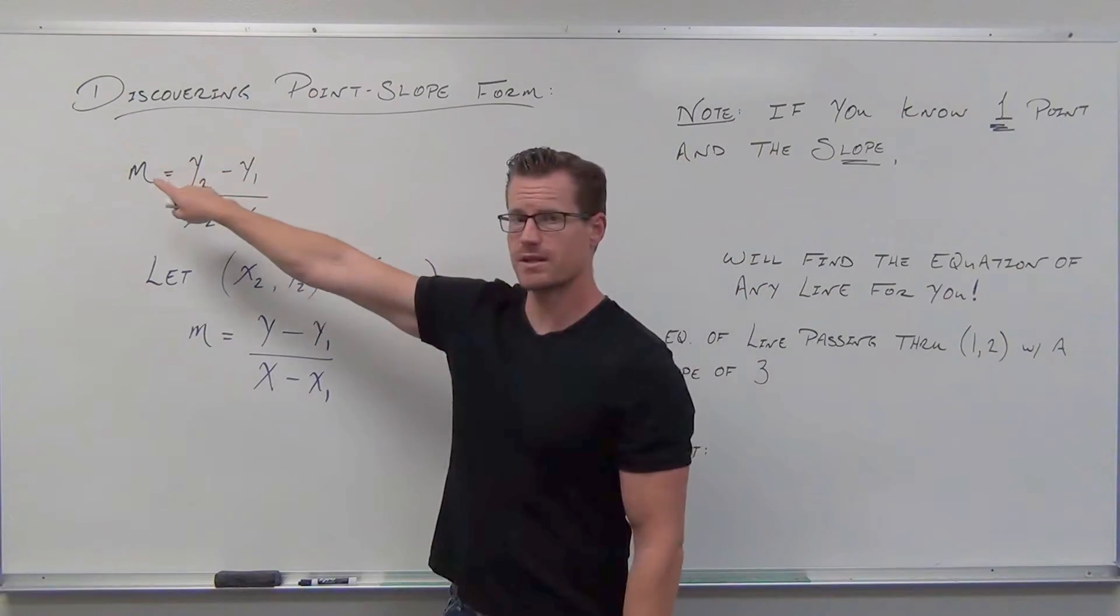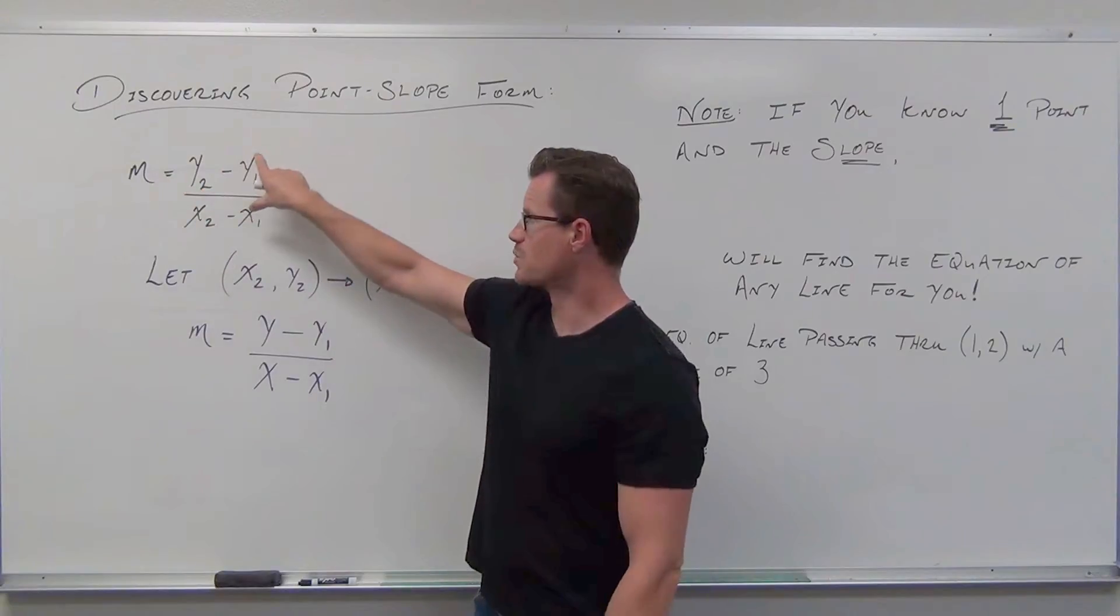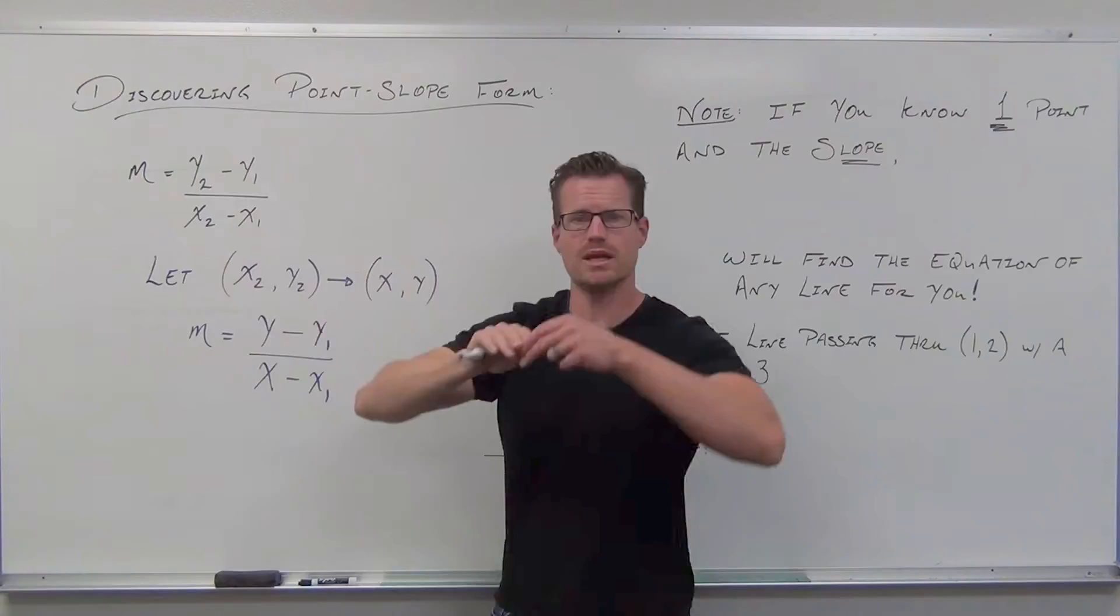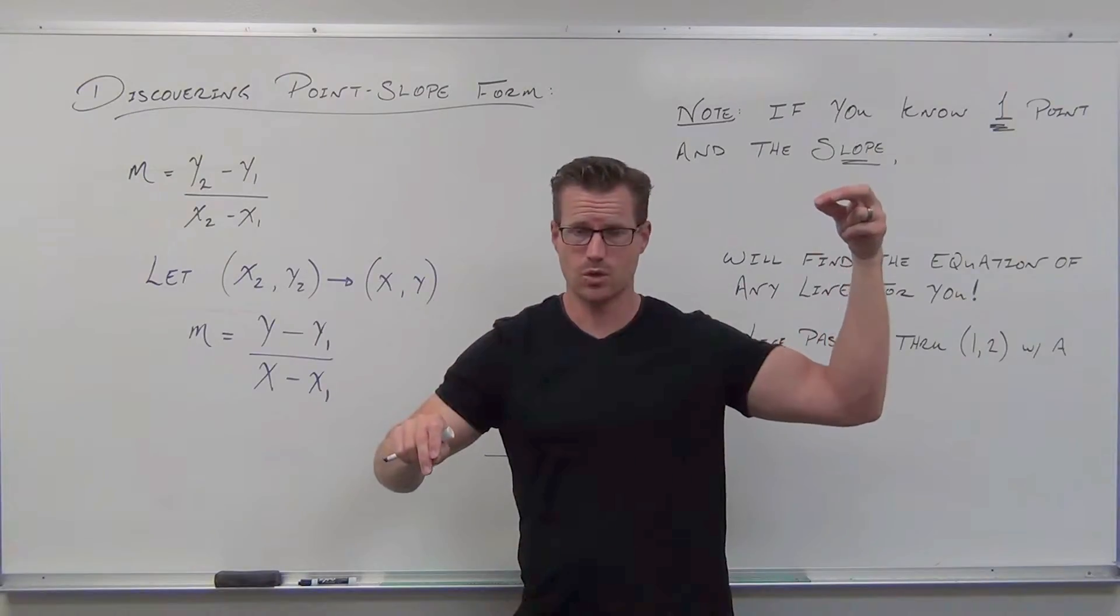The recap here is, you can fix two points to find the slope. Now the idea is, fix one point, know the slope, you don't have to fix that second point. It can represent any point in the line.